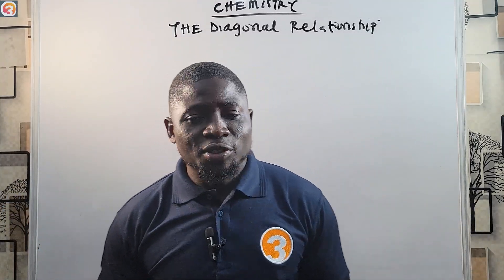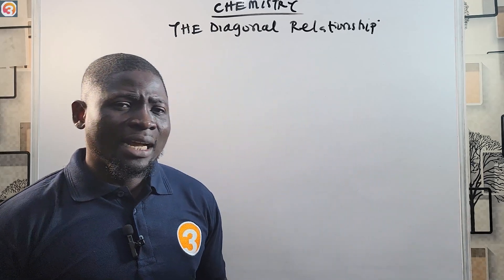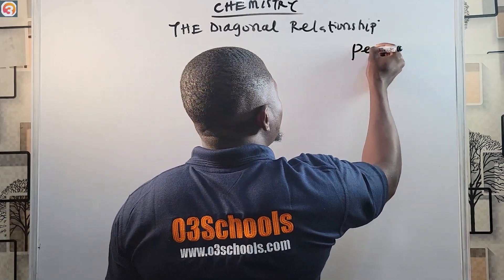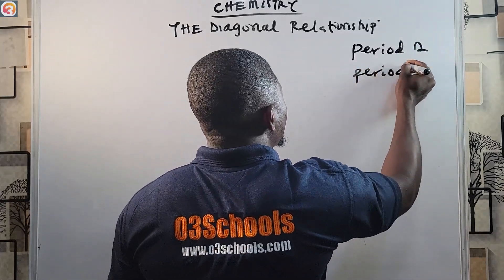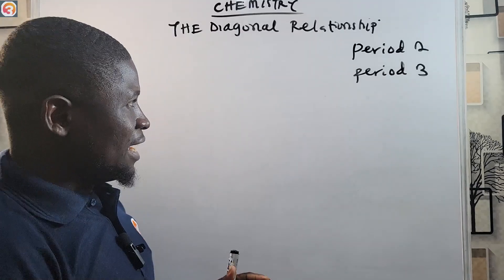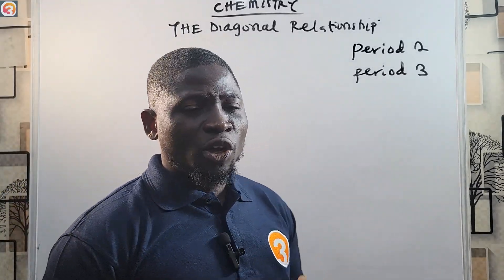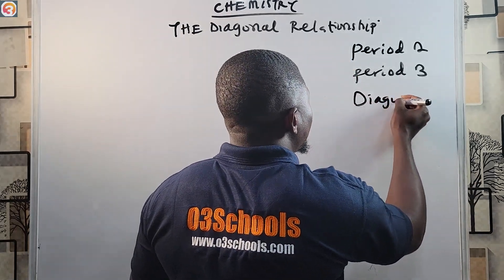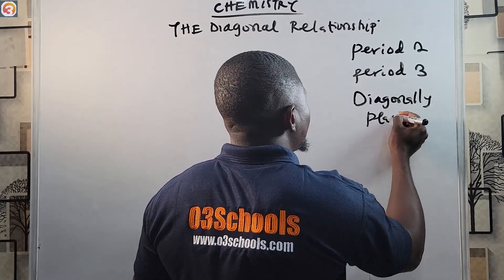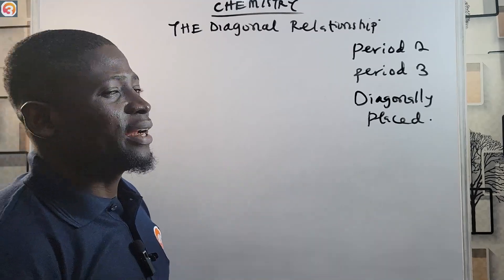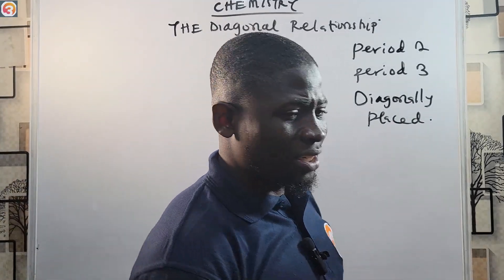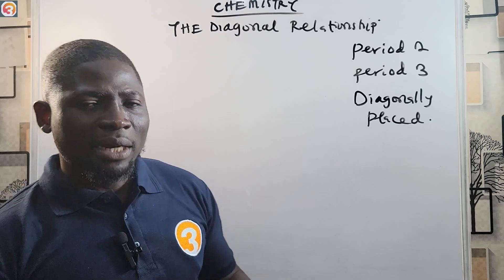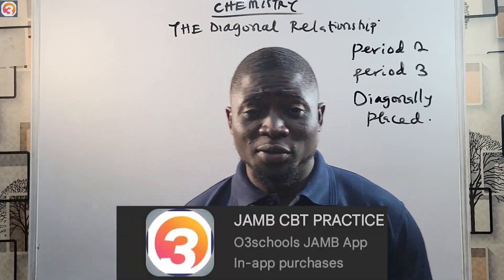The diagonal relationship is a term used to describe similarities in properties of Period Two and Period Three elements that are diagonally placed in the periodic table. That is what the term 'diagonal relationship' entails — similarities in properties between Period Two and Period Three elements diagonally placed.